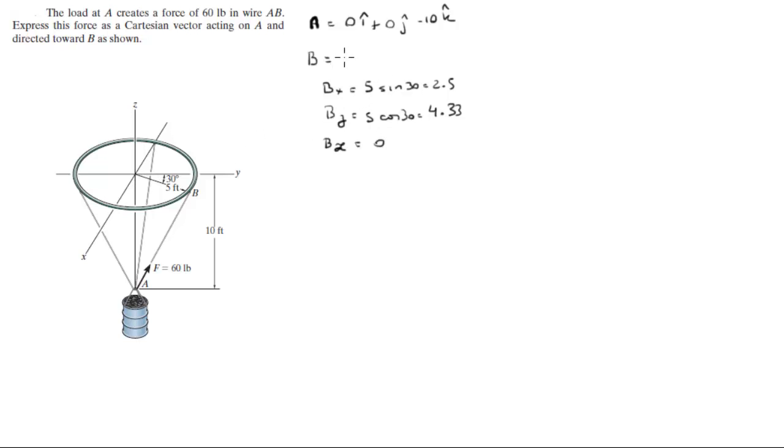And 0 for the z component because it sits right at the xy plane. So 2.5i plus 4.33j plus 0k.